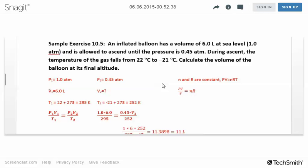For the second set, at the higher altitude, the pressure is 0.45 atmospheres. I'm trying to find the volume there. The temperature went down from 22 to negative 21 Celsius. Put that in Kelvin: 252 Kelvin.